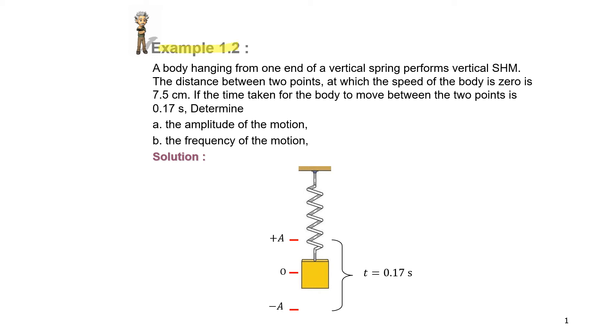Example 1.2. A body hanging from one end of a vertical spring performs vertical simple harmonic motion. The distance between two points at which the speed of the body is zero is 7.5 cm. If the time taken for the body to move between the two points is 0.17 seconds, determine the amplitude of the motion and the frequency of the motion.